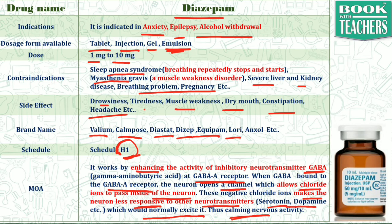In short, Diazepam works by enhancing GABA activity. GABA is an inhibitory neurotransmitter, so Diazepam tells GABA to inhibit the neurotransmitter — since there is already an increased activity of neural function. When GABA binds to the GABA receptor, it allows chloride ions to pass inside the neuron, causing the neuron to respond less to other neurotransmitters like serotonin and dopamine, which excite the neuron. Ultimately, this results in calming of the nervous activity. I hope you have understood the activity and mode of action of Diazepam. Thank you for listening.